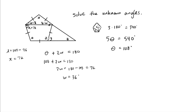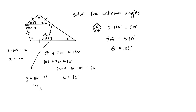This here is your theta value — theta is 108. We can solve for y using supplementary angles. So y equals 180 minus 108, which equals 72. So we know our y value — this is 72.